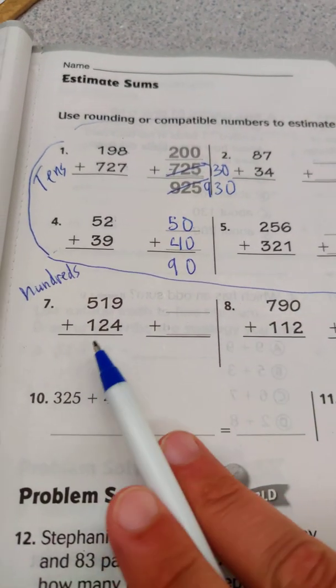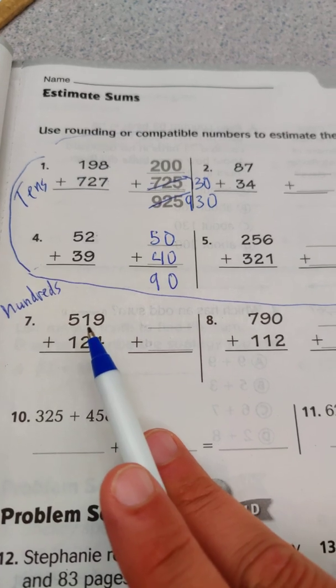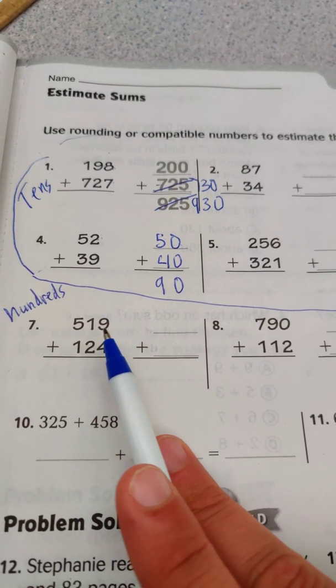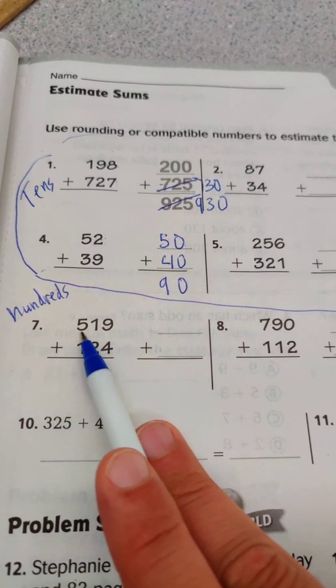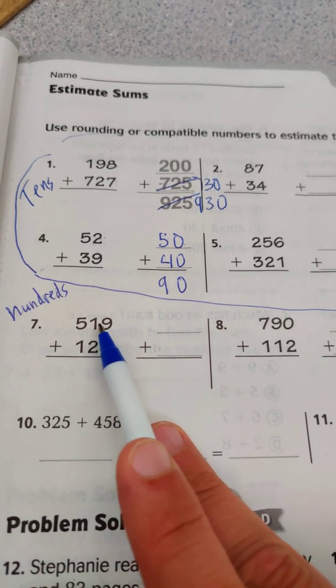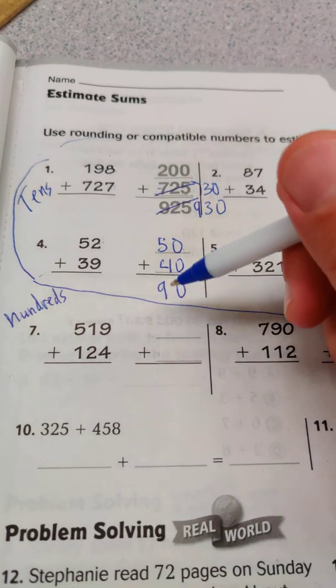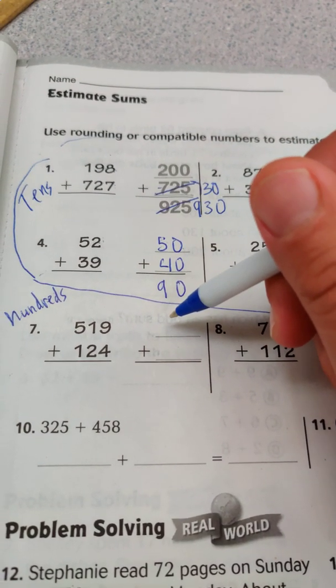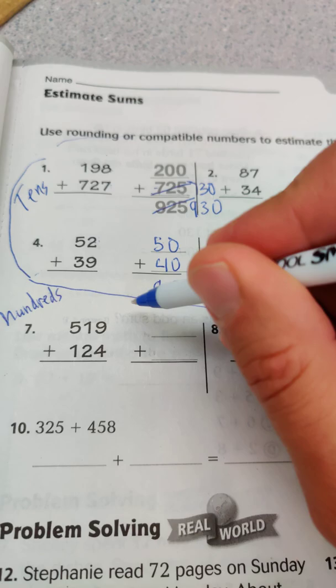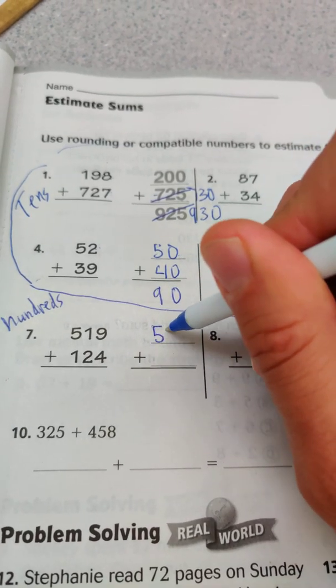For one of the hundreds problems, instead of looking at the ones, since we're rounding to the nearest hundred, we look at the tens. The tens digit is one, which is less than five, so we round down. Instead of 519, it becomes 500.